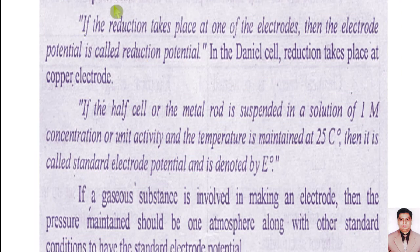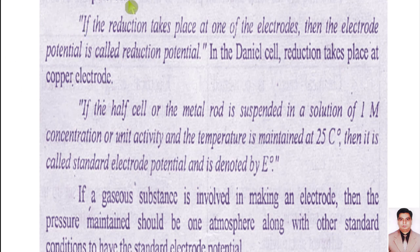Similarly, reduction potential means if reduction takes place at one of the electrodes, then the electrode potential is called reduction potential. In the galvanic cell, reduction takes place at the copper electrode, so there will be reduction potential. You can say that in the electrochemical cell, the zinc rod has oxidation potential and the copper rod has reduction potential.